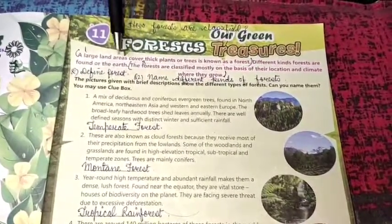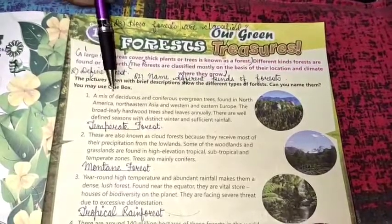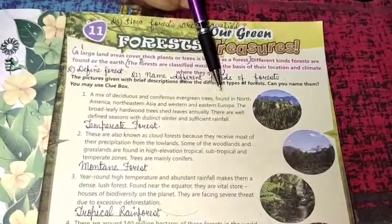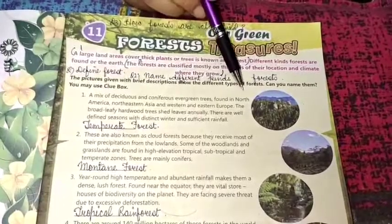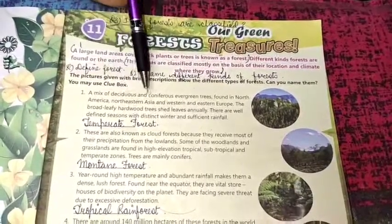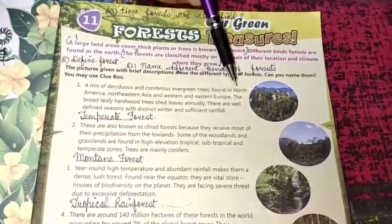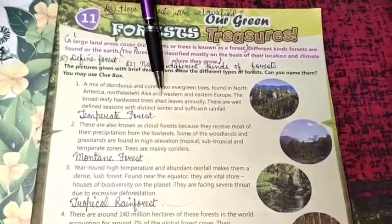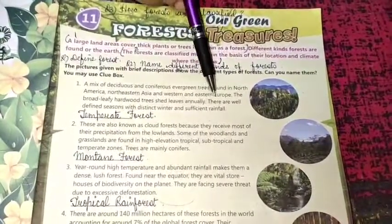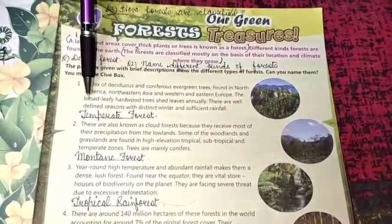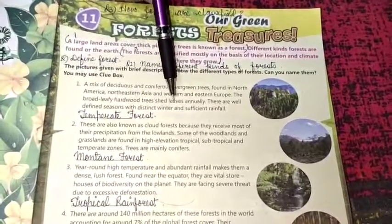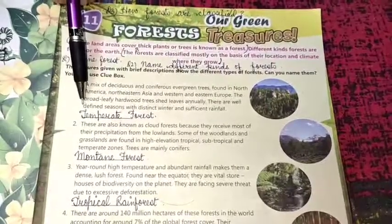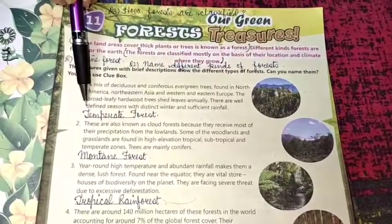Question number 1: A mix of deciduous and coniferous evergreen trees found in North America, Northern East Asia, and Western and Eastern Europe. The broad leafy hardwood trees shed leaves annually. There are well-defined seasons with distinct winter and sufficient rainfall. Such forests are known as temperate forests.